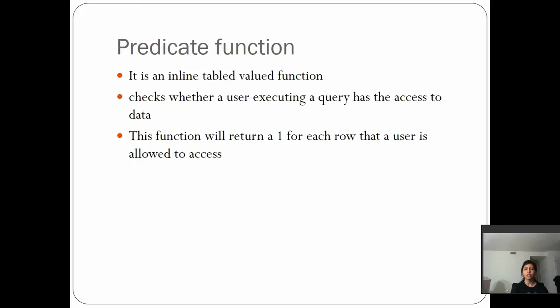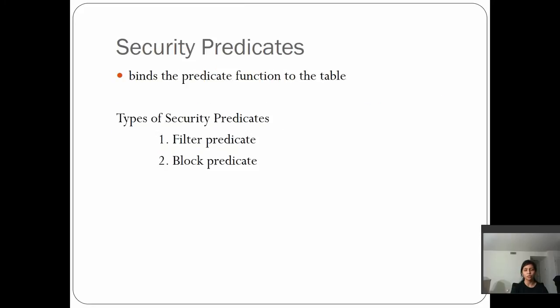The predicate function is nothing but an inline table-valued function. Using this predicate function, we check if the user who is executing the query has access to view the data or not. If the user has access, the function returns one for each row. This is the first step in Row Level Security, and once you create it, you identify the security predicates.